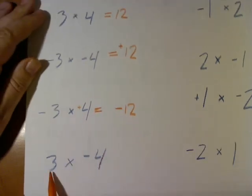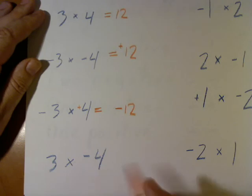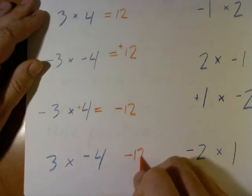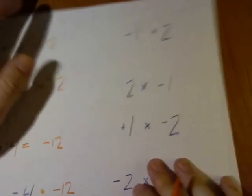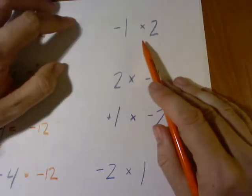Likewise, a positive 3 and a negative 4 gives us a negative 12. Let's look at some quick examples here.